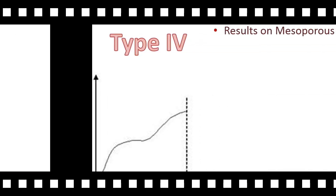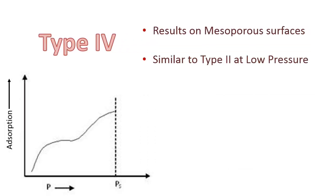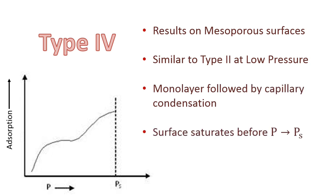Type 4 isotherms occur on mesoporous surfaces. They are similar to type 2 at low pressure. The monolayer formation is followed by capillary condensation. The surface saturates before pressure reaches saturated vapor pressure and it occurs due to capillary condensation.